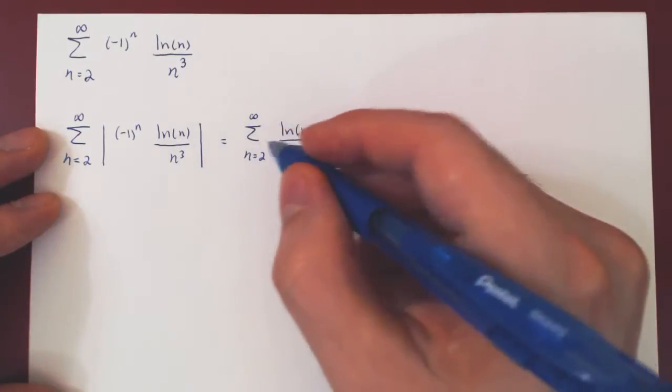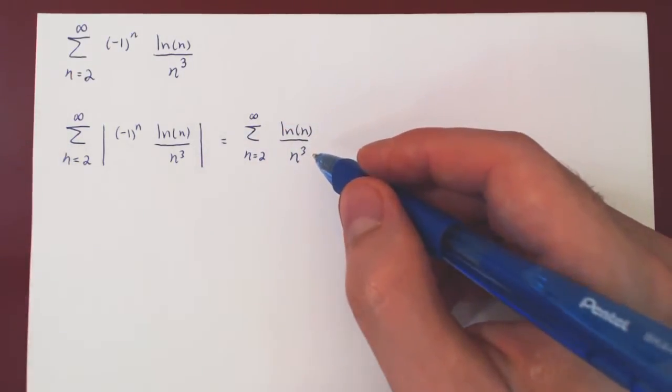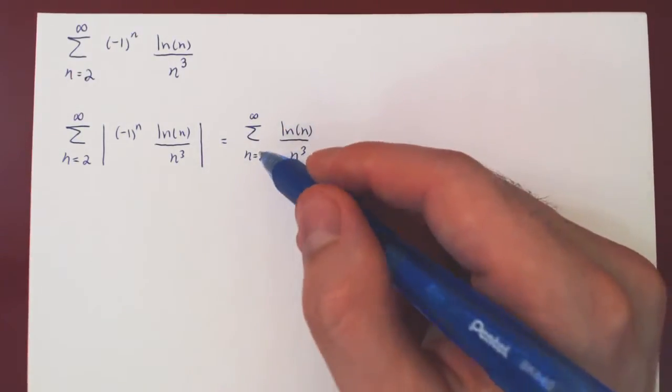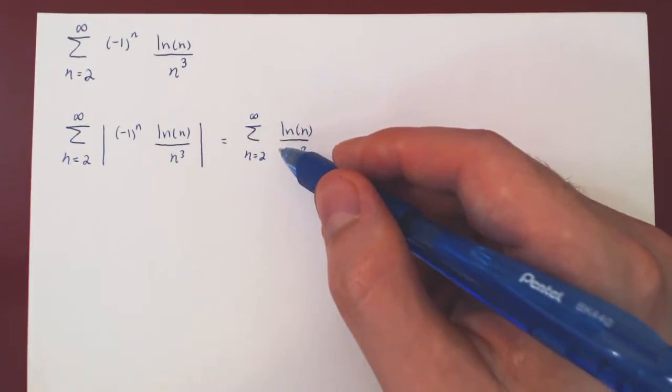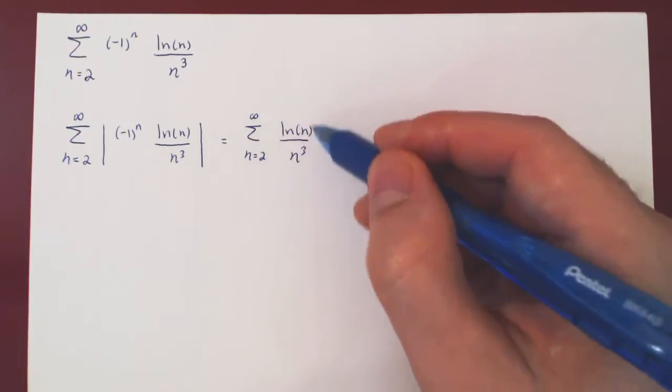And now we're asking, does this series converge or diverge? Here you have two options. You see a ln, and usually when you see a ln, you may think of the integral test. And here you can use the integral test.